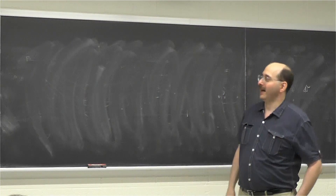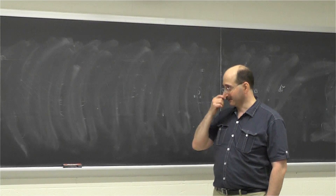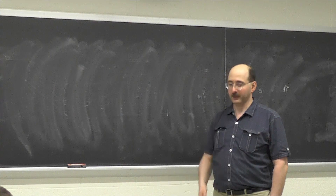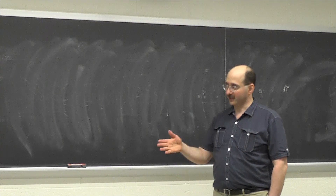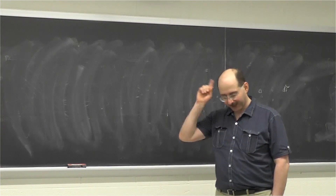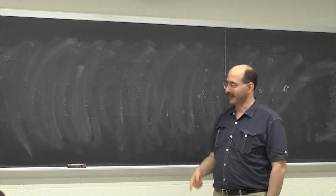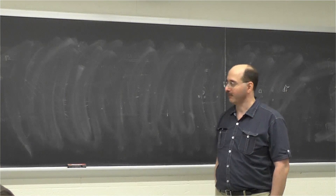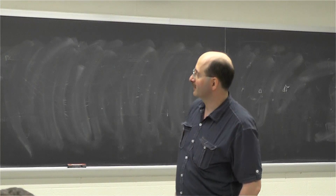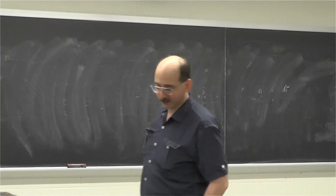Our speaker today is Michael Hull. He received his PhD from Vanderbilt University in the spring of 2013, and he's now at the University of Illinois, Chicago. Today he's going to tell us something about groups and more conflating quotients.